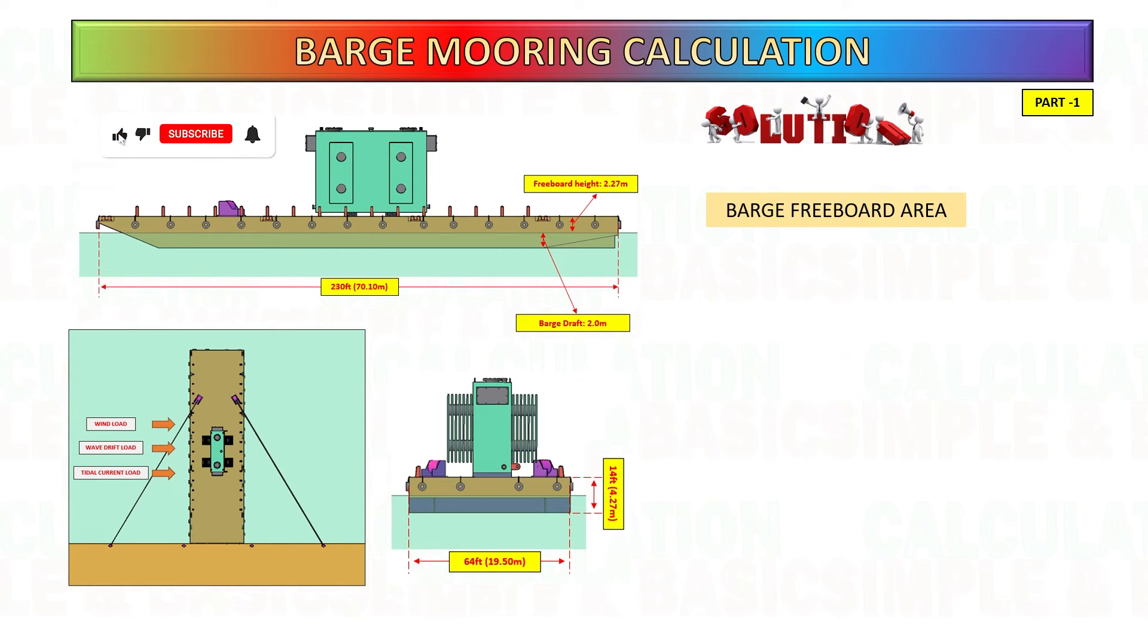Now, let's calculate the barge freeboard area. To get the barge freeboard area, multiply the barge overall length to freeboard height.